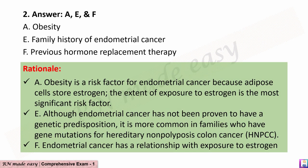The correct answers are A, E, and F. Rationale: A. Obesity is a risk factor for endometrial cancer because adipose cells store estrogen; the extent of exposure to estrogen is the most significant risk factor. E. Although endometrial cancer has not been proven to have a genetic predisposition, it is more common in families who have gene mutations for hereditary non-polyposis colon cancer (HNPCC). F. Endometrial cancer has a relationship with exposure to estrogen.